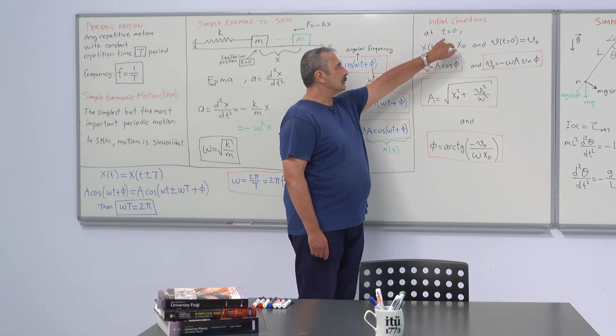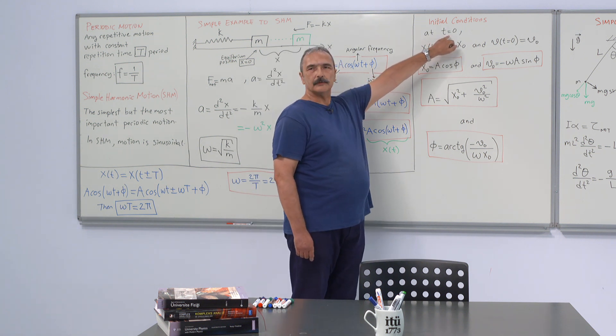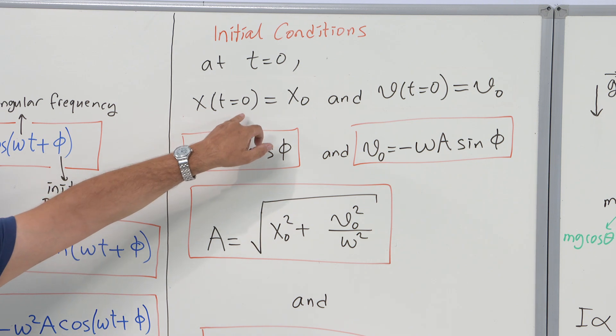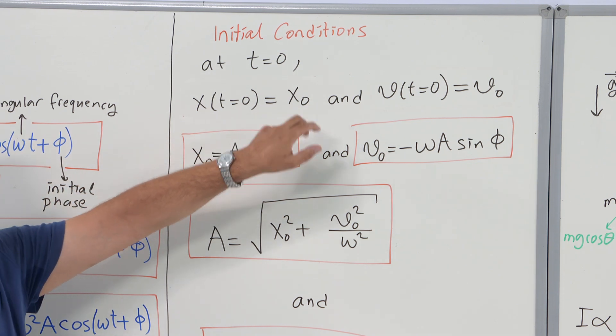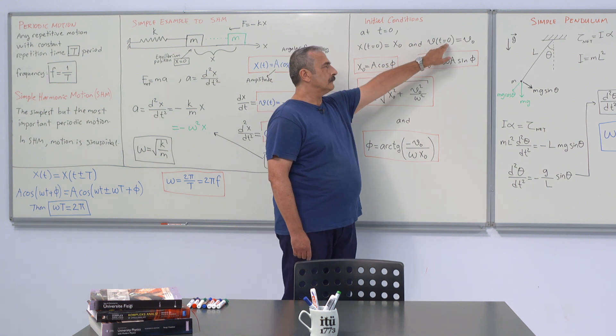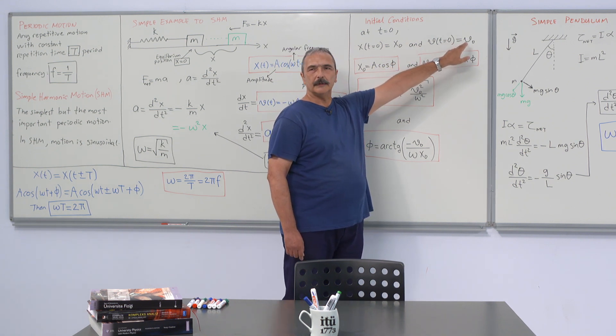Initial conditions are those at t equals 0. The displacement, let's call it x naught, and initial velocity, let's name it v naught.